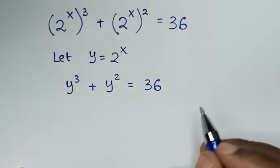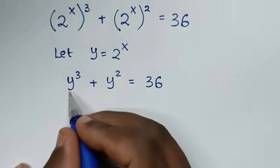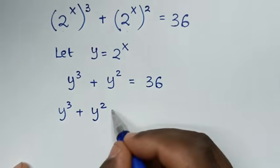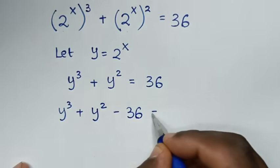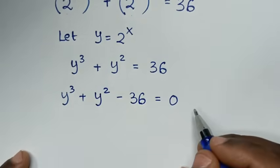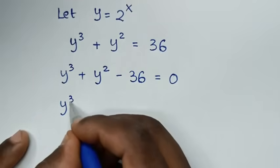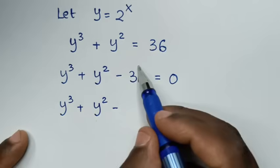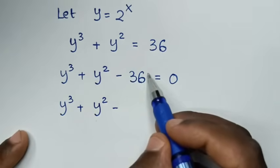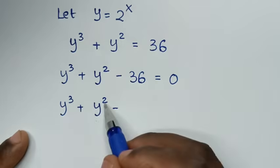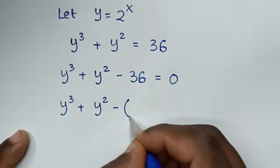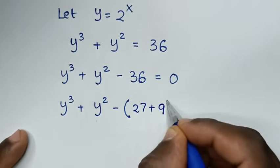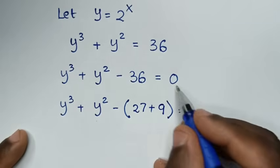In the next step, we take 36 to the left side, so it will be y³ plus y² minus 36 equals 0. Then we split 36 into 27 plus 9, so y³ plus y² minus (27 plus 9) equals 0.